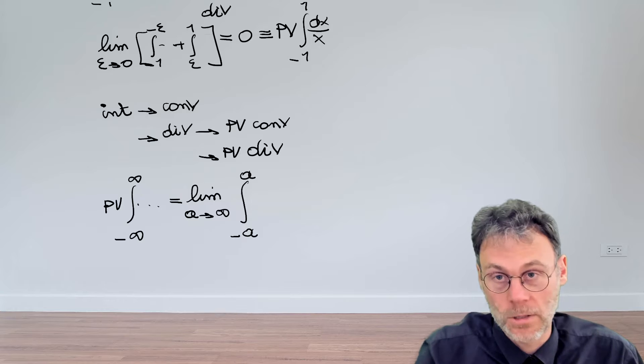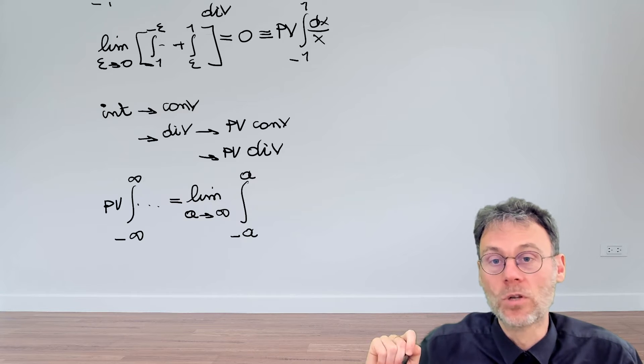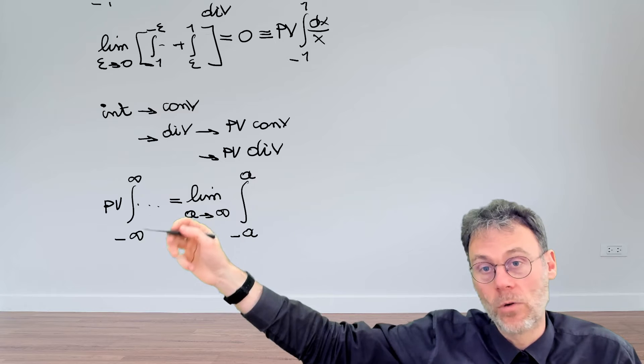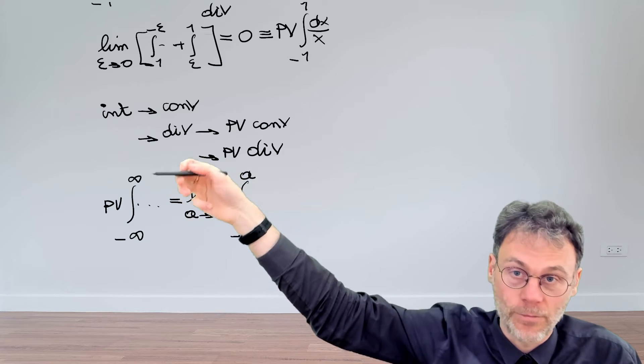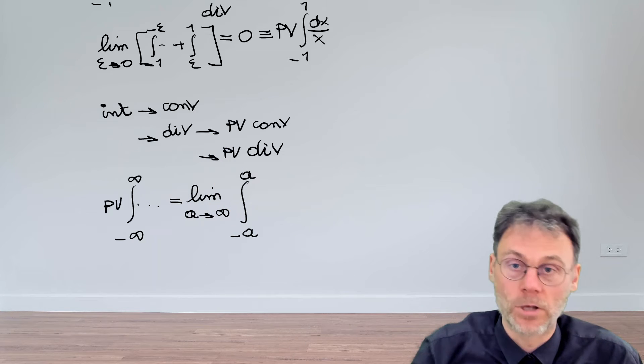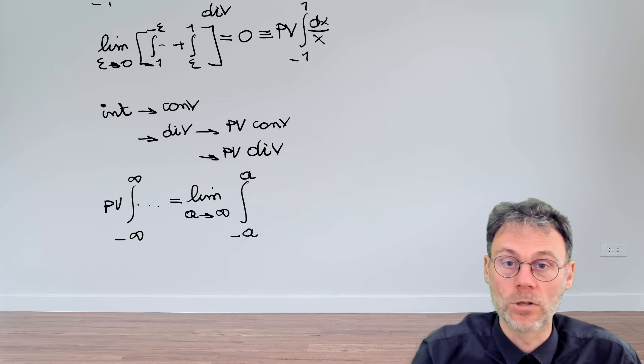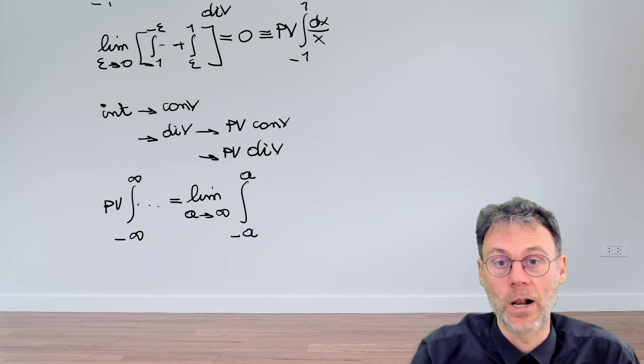And not, as would be the case without the PV sign, as two separate limits, one limit going towards minus infinity and a separate limit going towards plus infinity. Okay, so that's the concept of Cauchy's principal value of an integral.